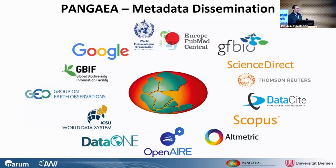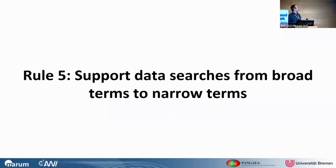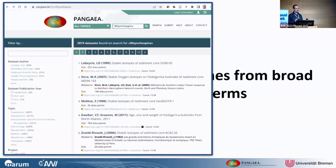We also appear in Google Dataset Search because we have very detailed schema.org metadata. Interestingly, the Pangea metadata schema, although already 30 years old, is very similar to schema.org in both concepts and structure. The second rule I want to talk about is supporting data searches from broader terms to narrower terms. This applies more to the Pangea internal search engine, since Google has its own mechanisms. Here is a simple example of what's going on: a user entered a very specific term about planktic foraminifera.